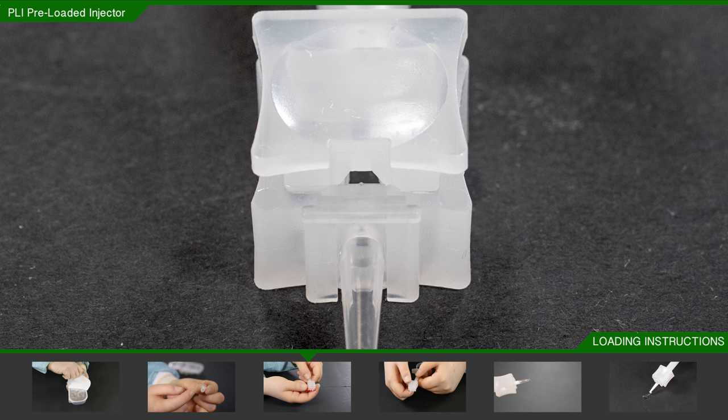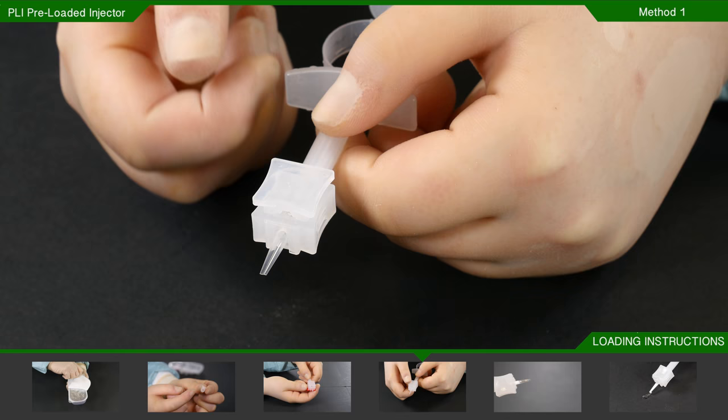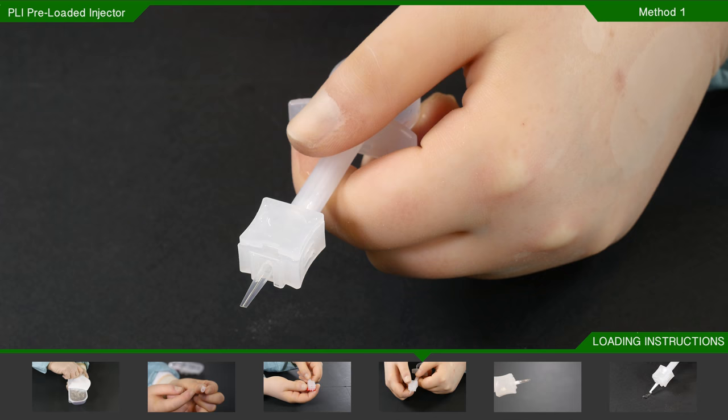Holding the tip away from you, place your index fingers under the body with both of your thumbs on the loading tab. At this point, press firmly so that the tab is fully flush against the PLI body.